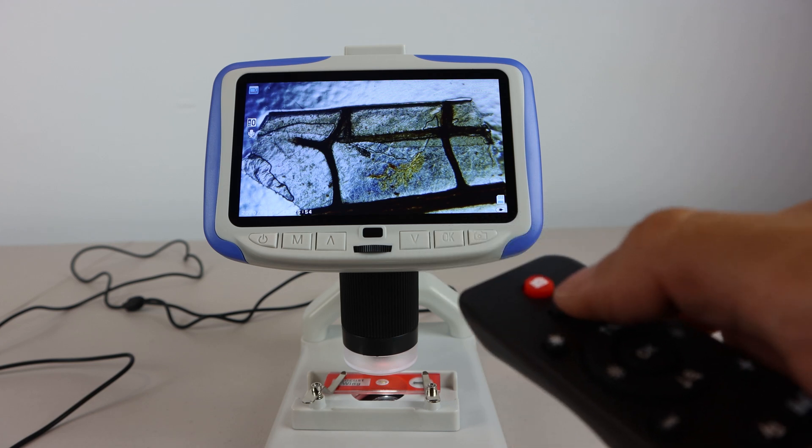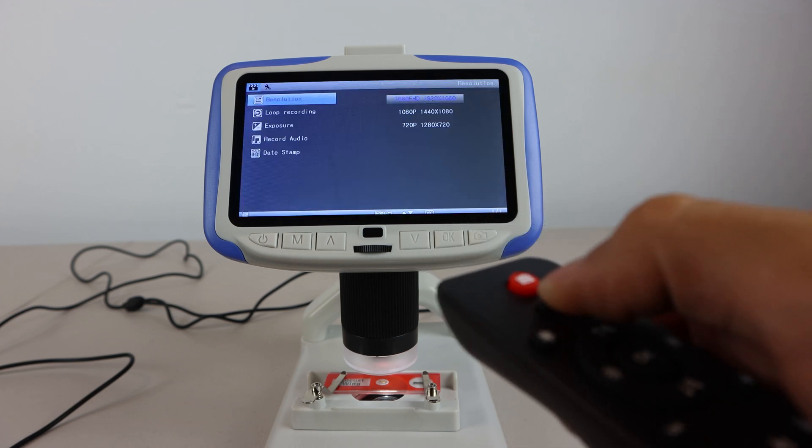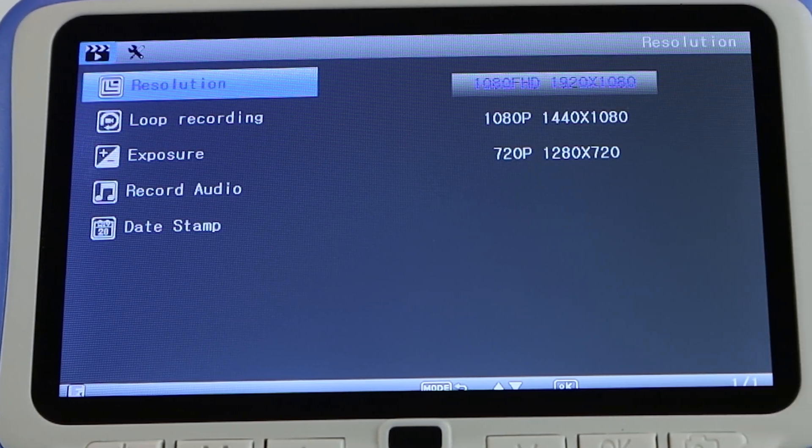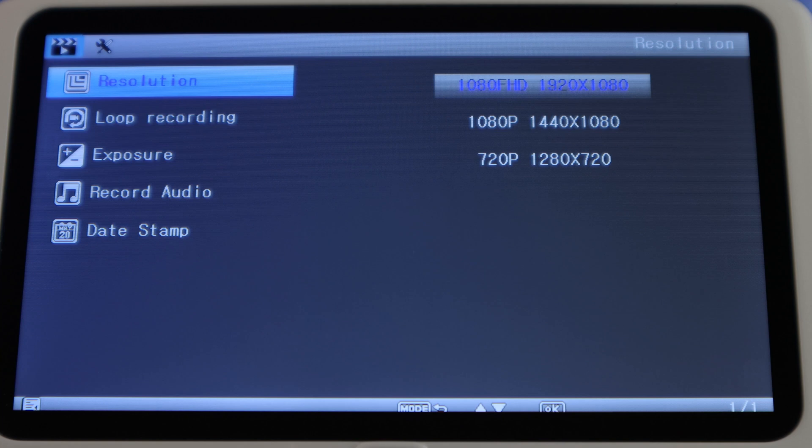The menu key on the remote allows you to change the unit's settings. Though note that this menu can't be accessed using the physical keys. So it's important that you don't lose the remote.